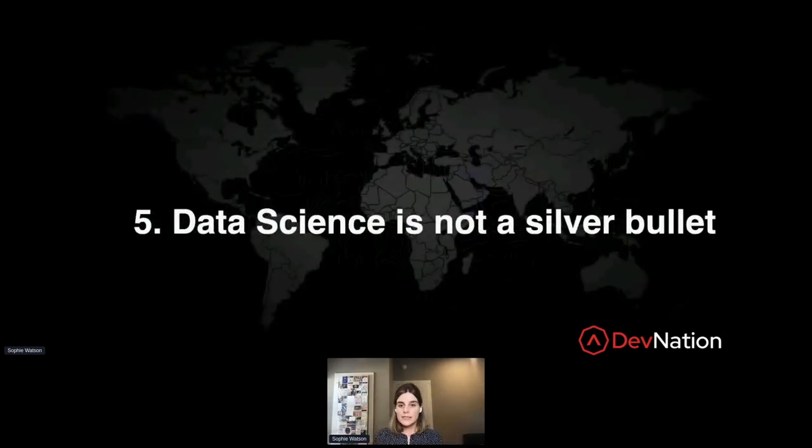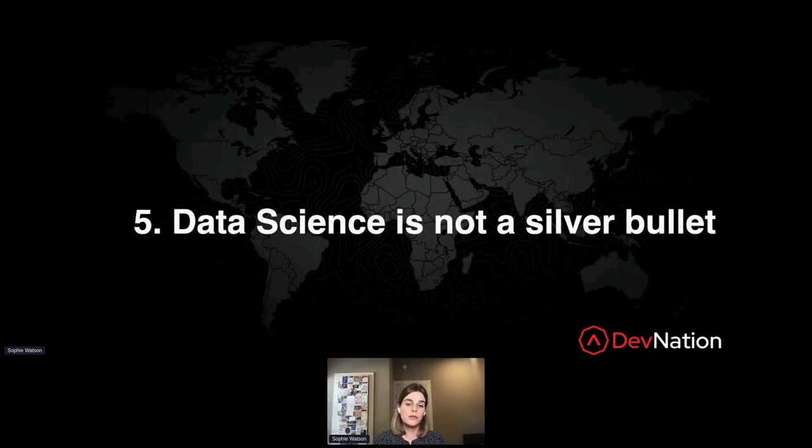So we've talked about data science, we've talked about some things that can go wrong and some things to keep in mind. And I just want to end by telling you that data science and machine learning can solve many problems, but it can't solve all of the problems.